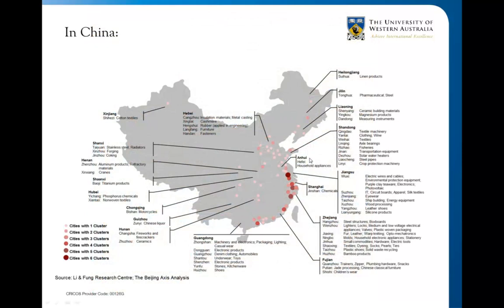In China, this graphic shows Chinese cities with the number of clusters — the number of different industries that all cluster there. The larger red dots indicate cities with six clusters. For example, one small area has electric wires, T-wear electronics, IT circuit boards, apparel, silk textiles, and eyewear. Each of these are clusters, and while we're not suggesting all these industries are necessarily related to each other, they are clusters of products.